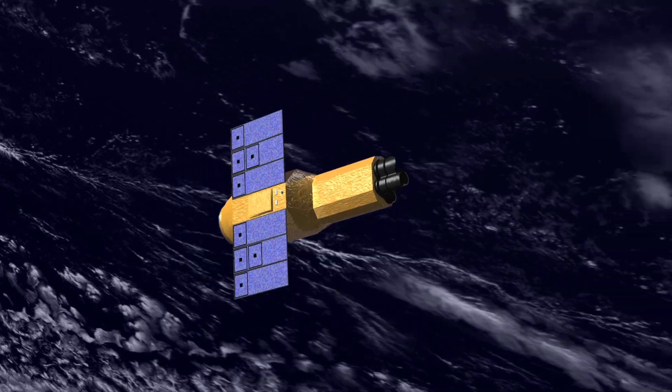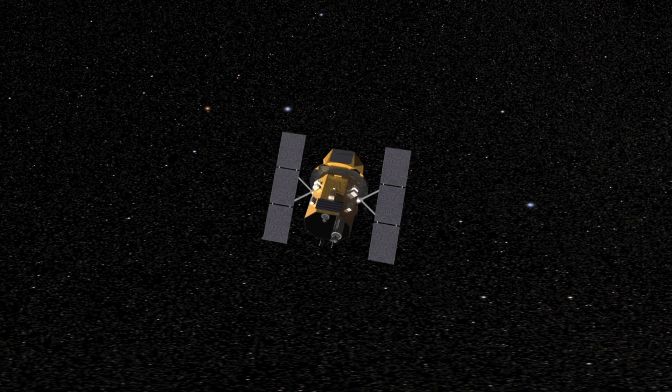Eta Carina's most recent periastron occurred in August 2014, and many of NASA's space-based telescopes, as well as ground-based observatories, looked on.